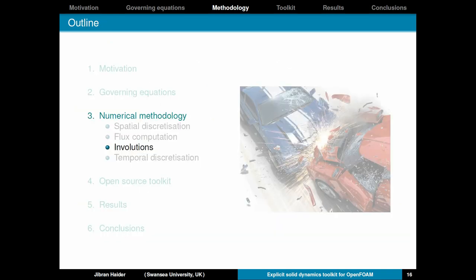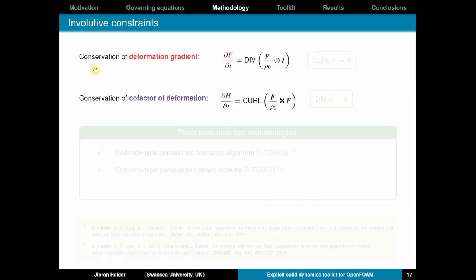Now, I'm going to talk about something which is important, the involutions. So, we'll just recall the two equations that I showed in the beginning of the presentation. One is the conservation of the deformation gradient and the other one is the conservation of cofactor of deformation. These two equations are repeated here and we know that these come with these involutive constraints that the curl of F dot and the divergence of H dot should be zero, which can be seen from the equations. Now, these two conditions need to be satisfied by your space-time operator in order to guarantee a stable numerical response over a long term period.